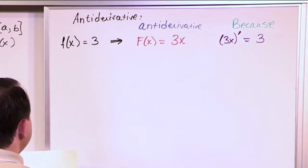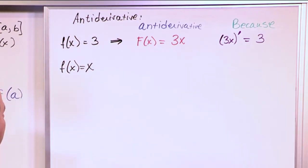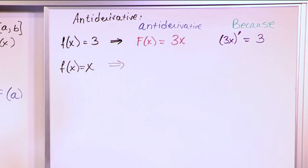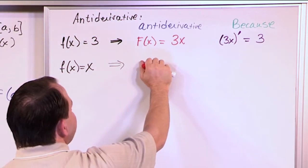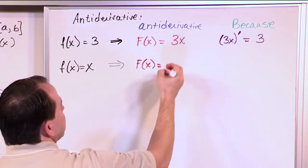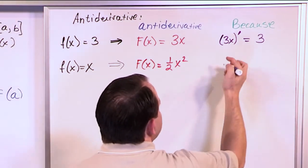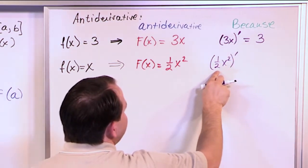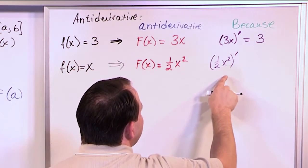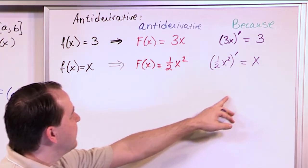What if I had another function f(x) = x? That looks like a 45-degree angle line. What would be the anti-derivative? You're trying to find a new function such that if you took its derivative, you would get back x. The anti-derivative F(x) is one-half x squared. That's the only one that works because if you take the derivative of one-half x squared, you get one-half times 2x, which equals x — exactly what we started with.